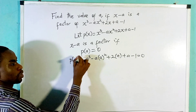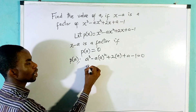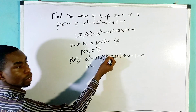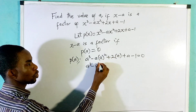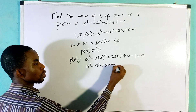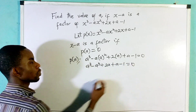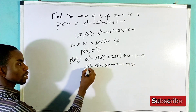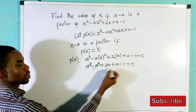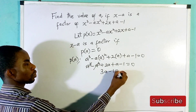Now this should be equal to 0. We have a cubed minus a cubed, which cancel out, plus 2a plus a minus 1 equals 0. 2a plus a is 3a, so 3a minus 1 equals 0.